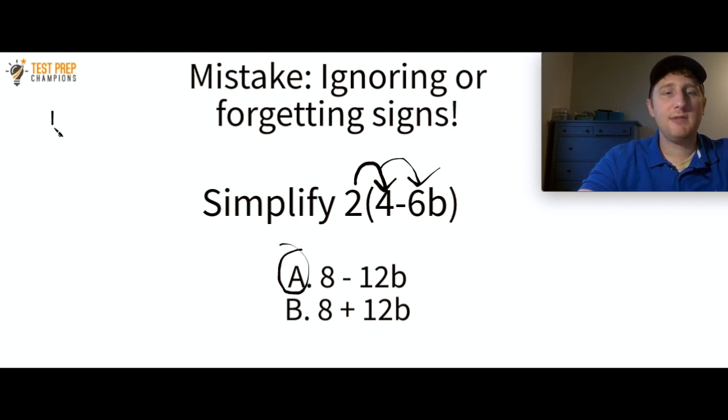So just don't forget signs. Even if it's something basic like this, you have, let's say, 4 times negative 3. I know it seems simple, but sometimes in the stress of a test-taking situation when you're in the heat of the moment, that time's ticking down, sometimes people make mistakes like this. So just remember, always consider that sign, don't ignore it, and don't forget about it.